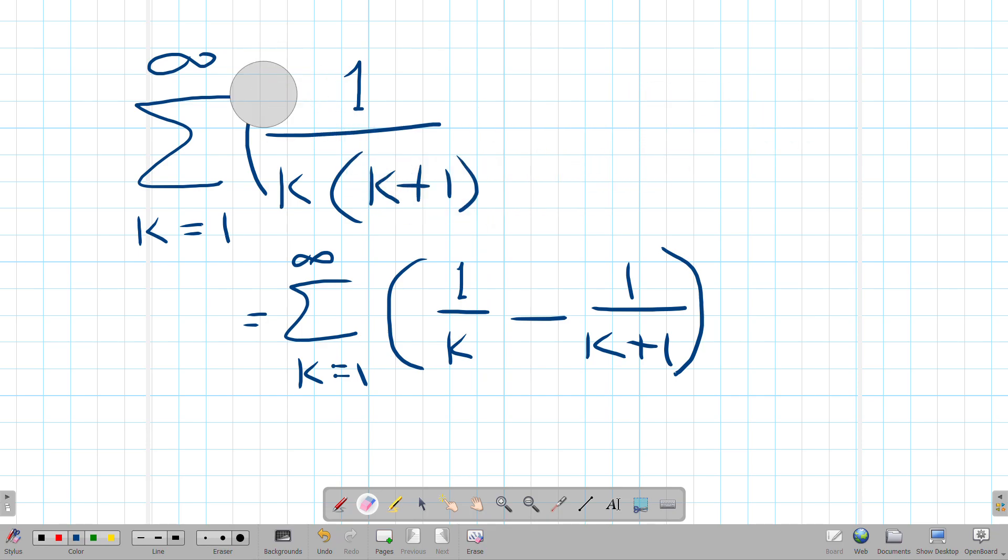So now let's do the first few terms. It's really 1 over k for k equals 1, which is 1 minus 1/2.